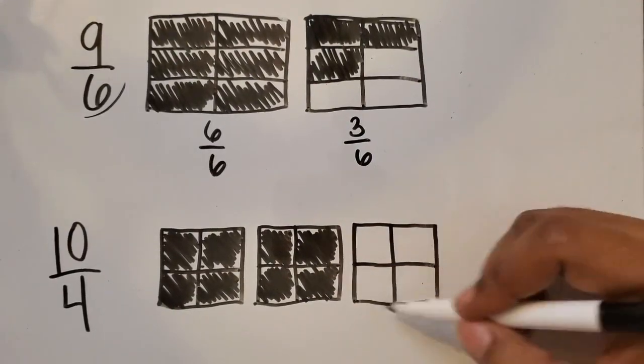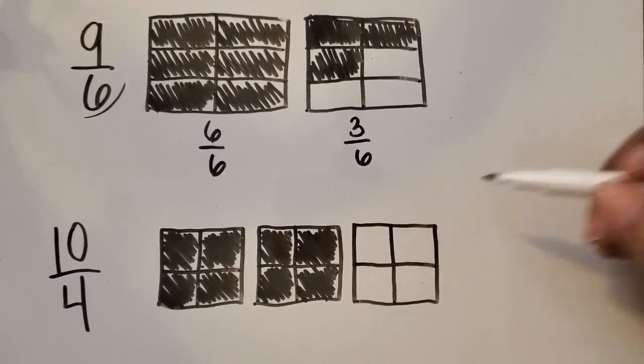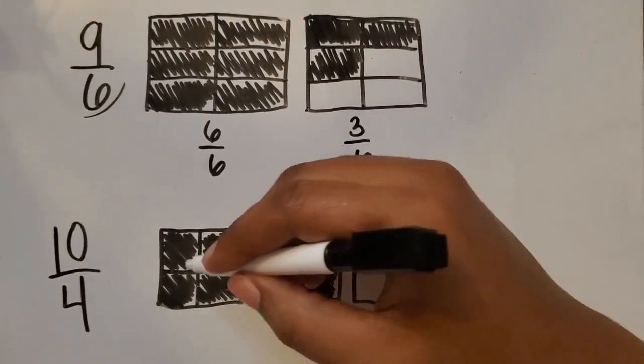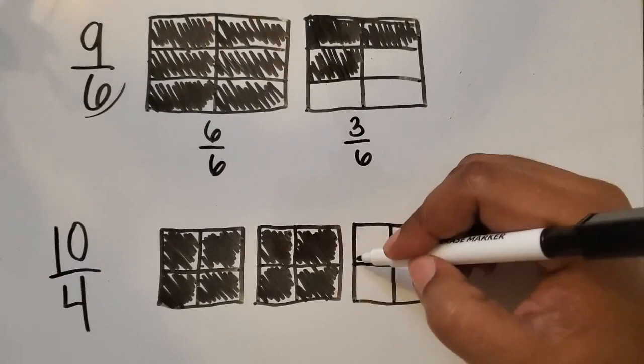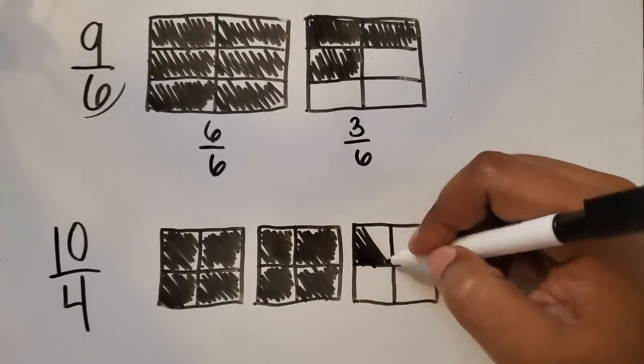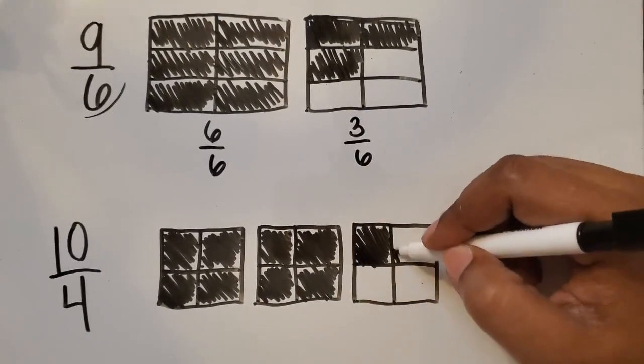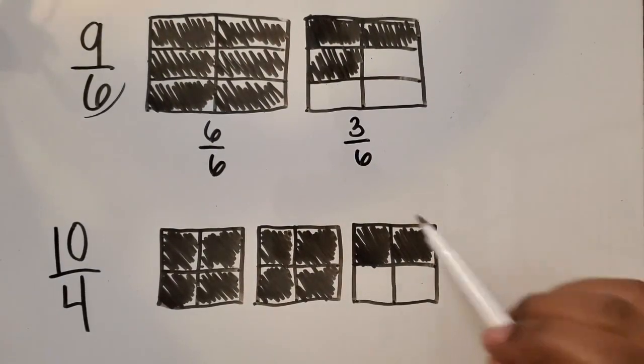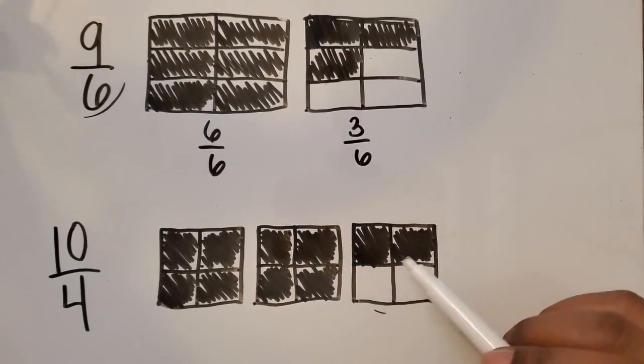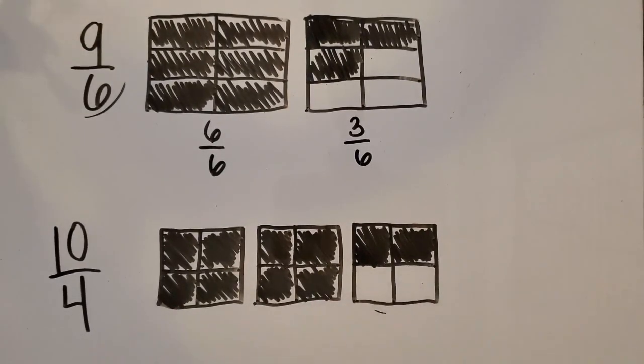Do we need to fill up this entire whole to get to 10 fourths? Let's find out. We have 4 fourths here, 8 fourths all together here. This one will make 9 fourths. And this box, or this space, will make 10 fourths. So we did not have to fill up that last whole to get to 10 fourths. So here we have 4 fourths, 8 fourths, plus 2 more fourths, equals 10 fourths.